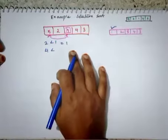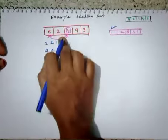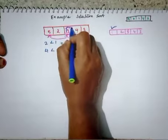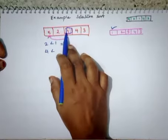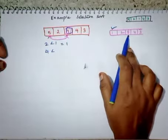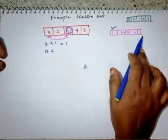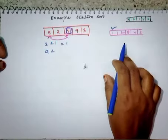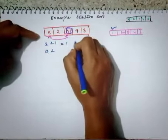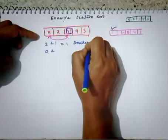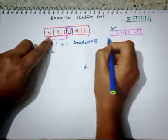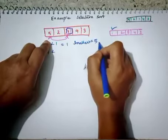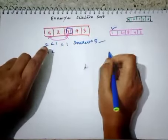Let's look at an example. The first condition is to find the smallest value. Here, the smallest value is one, so we swap it with the first element in the array, which is five. After swapping, we get the array: one, two, five, four, three. The first iteration is now complete. Now we move forward — the condition is to find the smallest and swap with the first element, which is five.